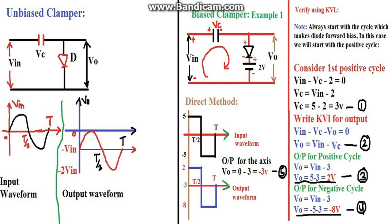If the negative portion of the diode were in the upward direction, the waveform would shift completely upward from 0 to plus 2VIN. So the unbiased clamper is straightforward. Now we move to the biased clamper, which is where students often get confused finding the output waveforms. I will explain a unique method for the biased clamper and also verify it using KVL to confirm it is correct.